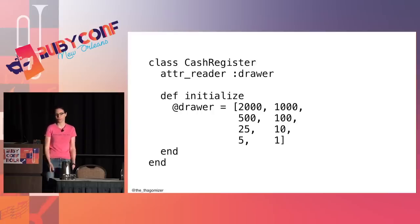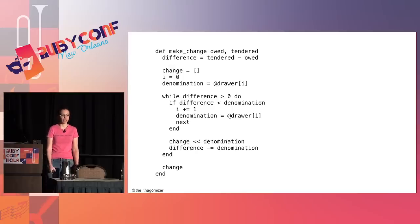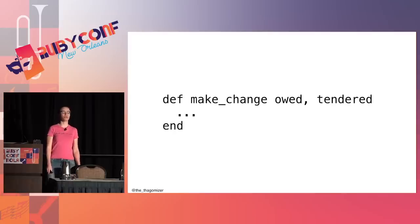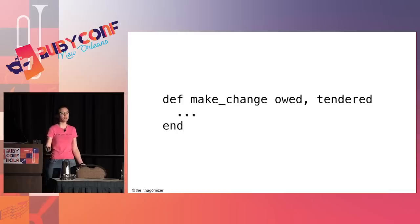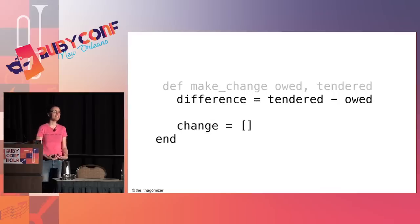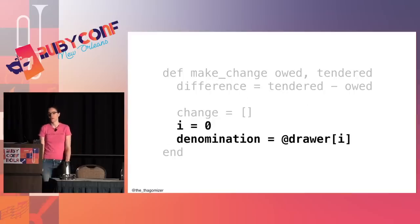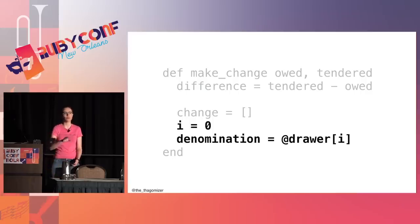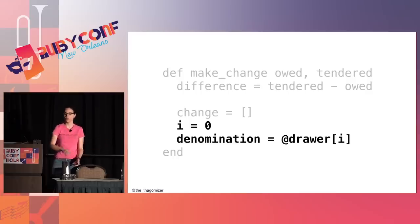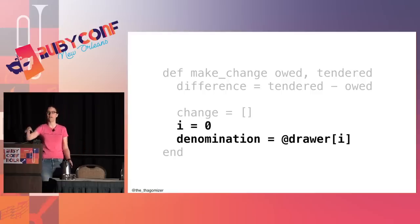The make_change method takes an amount owed and the amount the customer tendered. First, I calculate the difference — how much change I owe. I represent the bills and coins in a change array. Then I loop through the drawer, starting from the largest denomination. If the difference is less than the current denomination, I increment the index to the next smallest. If it fits, I add that denomination to the change list, subtract it from the remaining amount, and keep going until done.